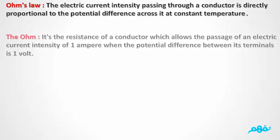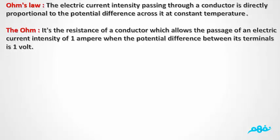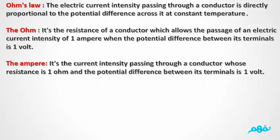Ohm: It is the resistance of a conductor which allows electric current to pass at an intensity of 1 ampere when the potential difference between its two terminals is 1 volt. Ampere: It is the current intensity passing through a conductor whose resistance is 1 ohm and the potential difference between its poles is 1 volt. Volt: It is the potential difference between the two poles of a conductor whose resistance is 1 ohm and its current intensity is 1 ampere.